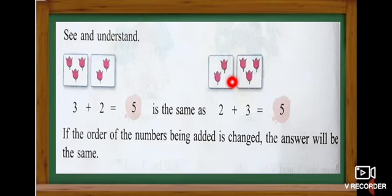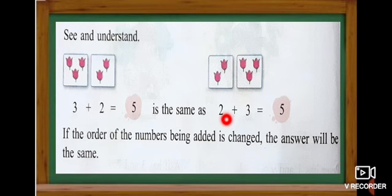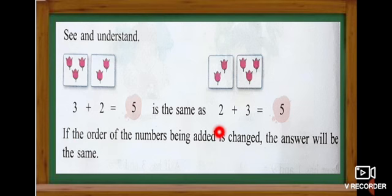Now in the first box how many flowers? One, two — so we write two first. And the next box: one, two, three — three flowers. Two plus three — what we get? Five. The order is changed. Here we write three plus two and here we write two plus three. The order of the number is only changed, but the answer is the same. If the order of the numbers being added is changed, the answer will be the same.